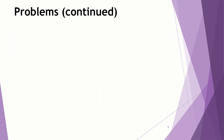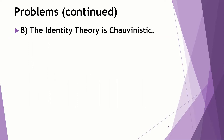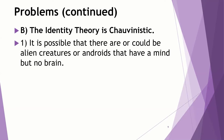A second problem with the identity theory — to use an odd word — is that it is chauvinistic. Not sexist, of course, but it's possible that there are other ways of having a mind besides having an organic human brain. It's chauvinistic toward that one substance. It seems possible that there are, or at least could be, alien creatures — extraterrestrials with intelligence — or androids that have a mind but no brain. Maybe aliens with a sophisticated neural network made of silicon, nothing like the human brain, but still possessing a mind.